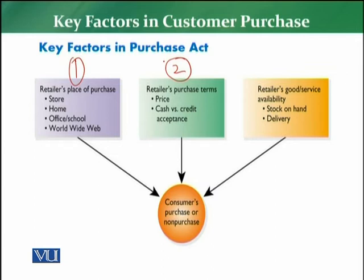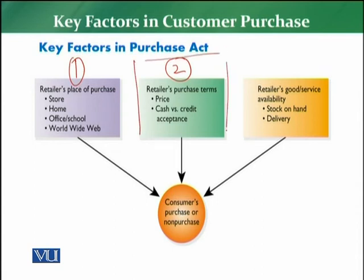Isi tarike se second part yeh hai ke kya customer ko as a purchase term cash ki offer ki ja rahi hai, credit ki offer ki ja rahi hai, debit card ya credit card ki facility di ja rahi hai. Kya option available hai usko payment karne ke liye — kya woh order ke zariye payment kar sakta hai, ya check ke zariye, ya credit/debit card ke zariye, ya buying cash par hi karni hai, ya customer ko 30 days, 15 days, 20 days, 60 days ka credit available hoga from the retailer. Yeh factor especially bahut important hai price-driven economies mein, countries like Pakistan jahan normally price is the major factor. So factor number 2 is actually one of the main factors jo ke poore business ko drive kar raha hota hai.